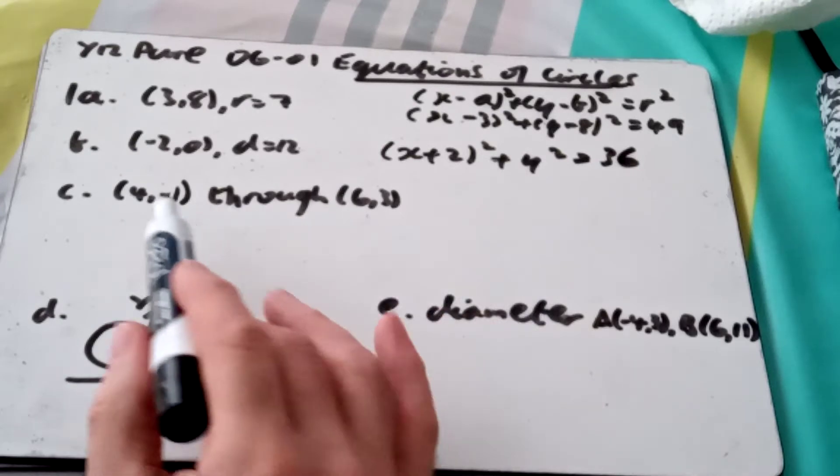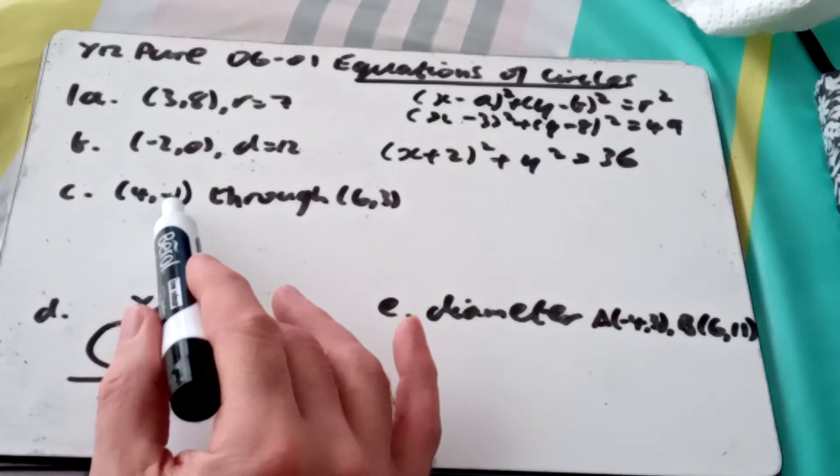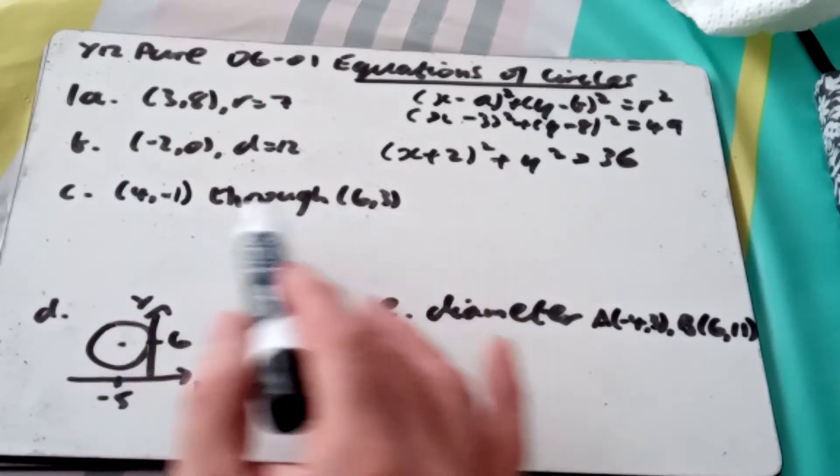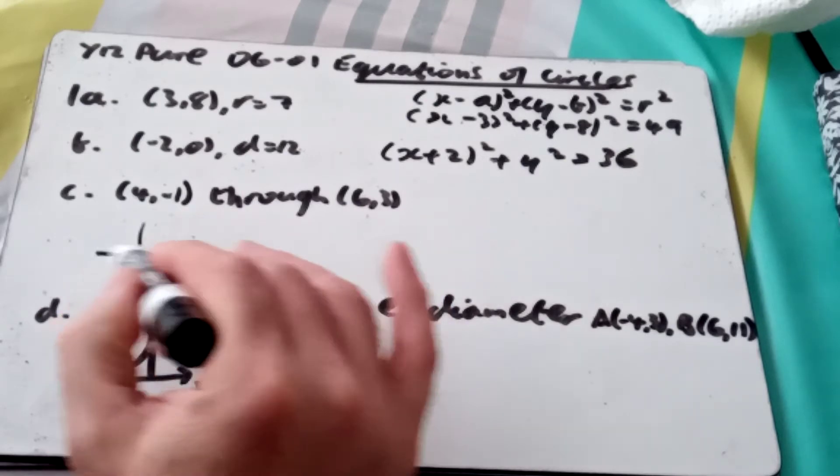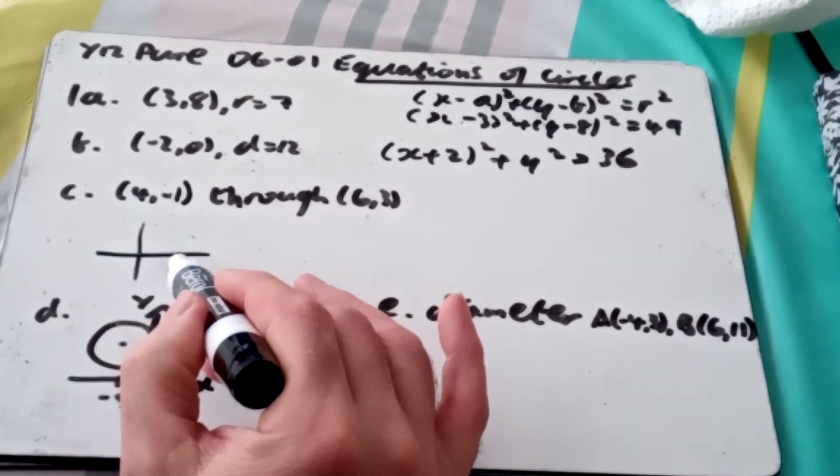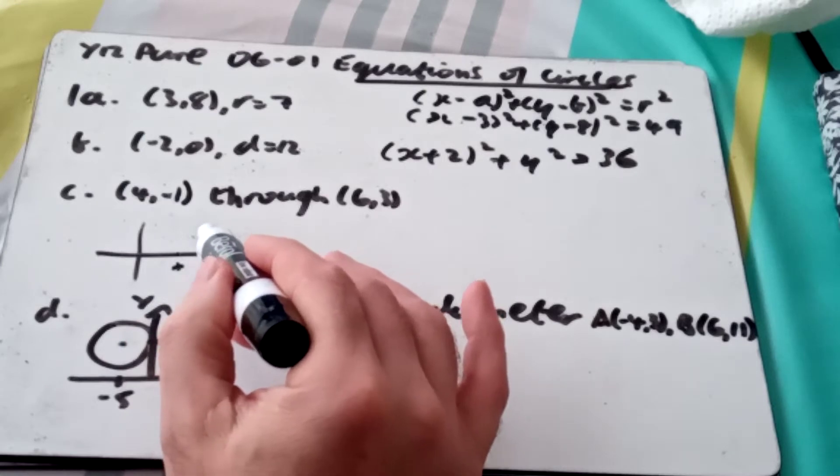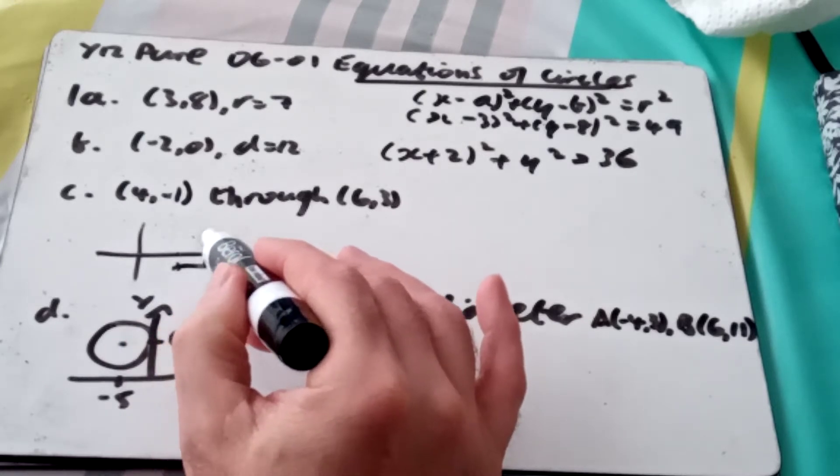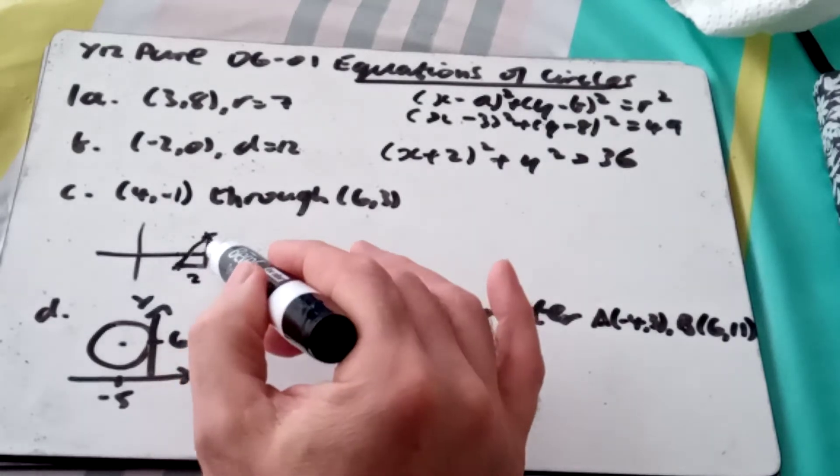In this case, we're given what the center is, (4, -1), so I can give you part of the answer: (x - 4)² + (y + 1)². But they don't give me the radius, they give me what it goes through. So if we do a little sketch then, (4, -1) is down here, and (6, 3) is 6 along and 3 up. So I've gone from 4 to 6, so 2 along, and from -1 to 3, up 4.